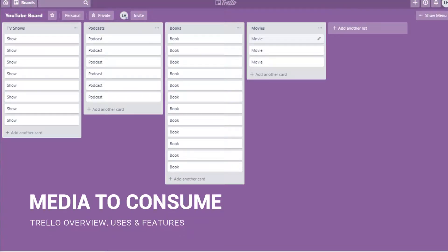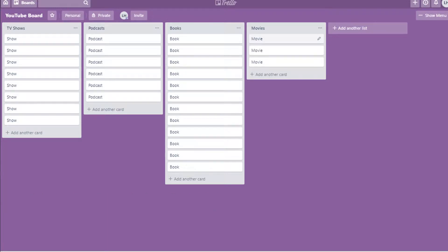Media to consume. So this is a board that contains a list of TV shows, podcasts, books, and movies that you eventually want to watch, read, or listen to. The lists are categories and each card represents an item to consume. You can include more information within each card to show who recommended the show, where to watch it, and how long it might be.